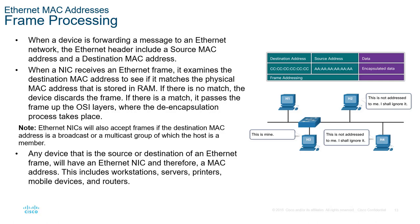A frame looks at destination and source address information to determine how to forward data. If I want to send something to another computer, I identify who I'm sending to and forward accordingly. If I don't know the destination's MAC address, I can send a broadcast — it goes to everyone, and devices that don't need it ignore it. If I do know the address, that is a unicast transmission.